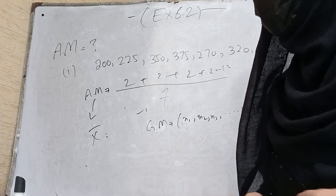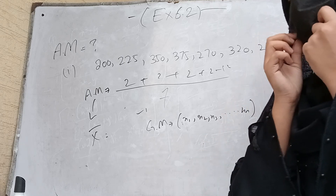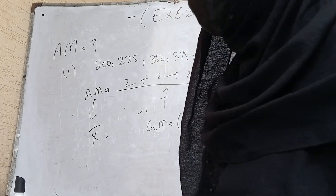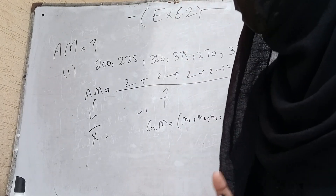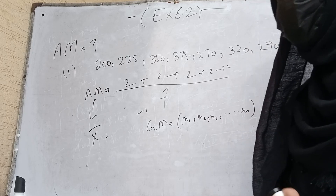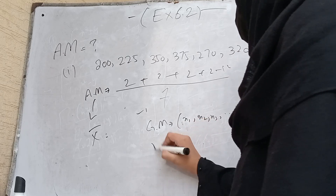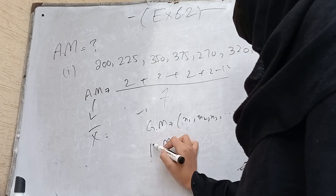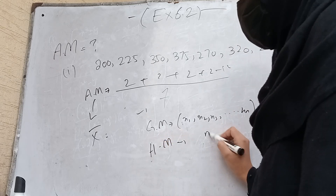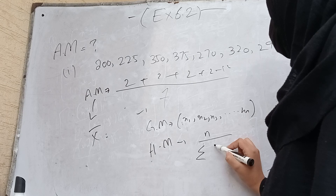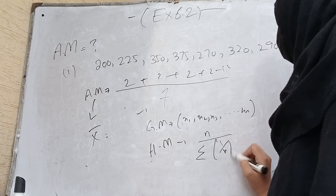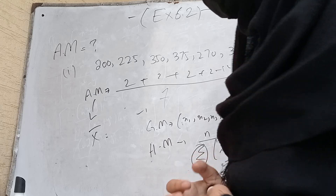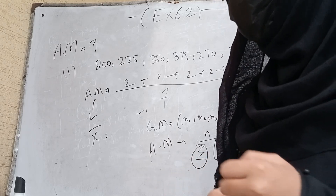Harmonic mean refers to the value obtained by reciprocating the mean of the reciprocals of x₁, x₂, x₃, and so on observations. In symbol, harmonic mean is equal to n divided by Σ(1/x).